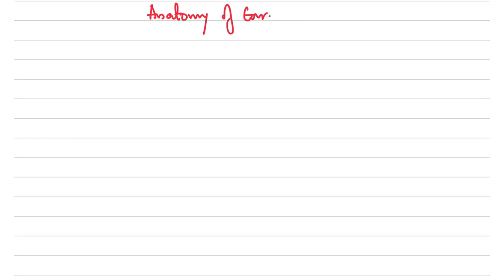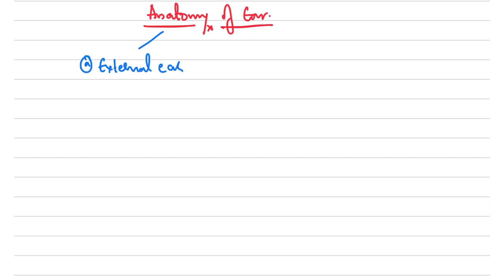Welcome. In this video we'll be discussing the anatomy of the ear — a brief overview of what you need to understand. The anatomy of the ear is divided into: first, the external ear; followed by the middle ear; and lastly the inner ear.